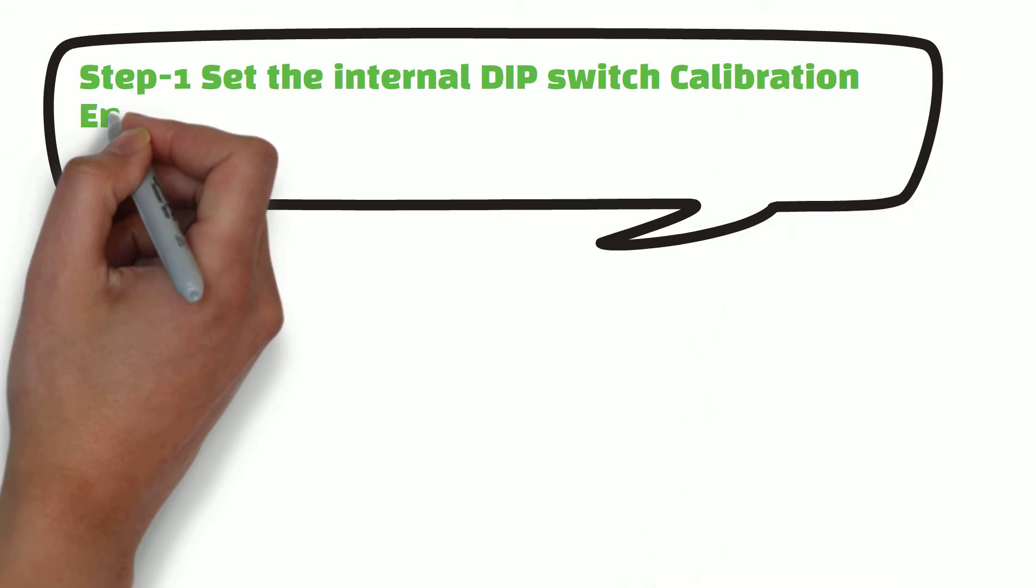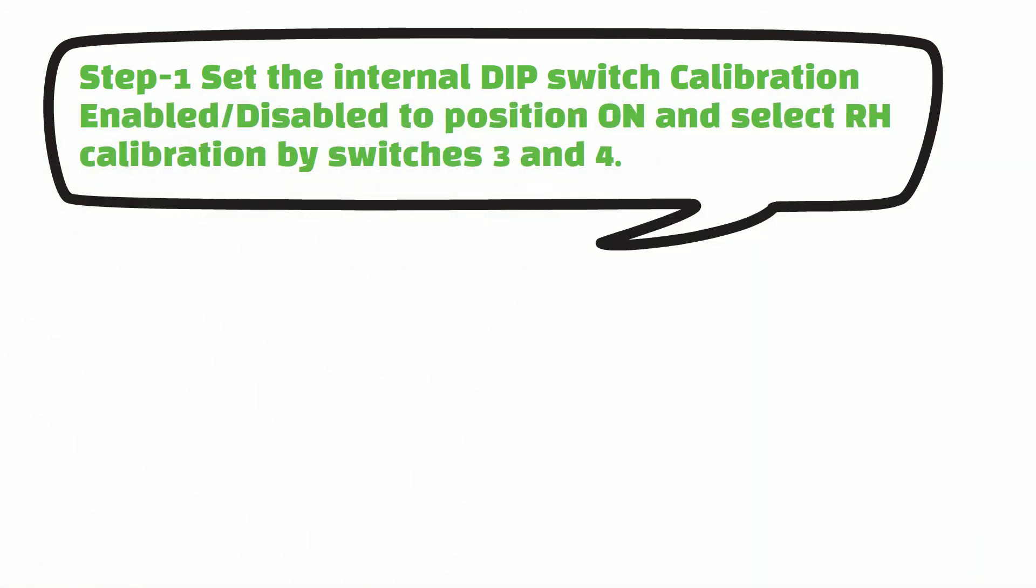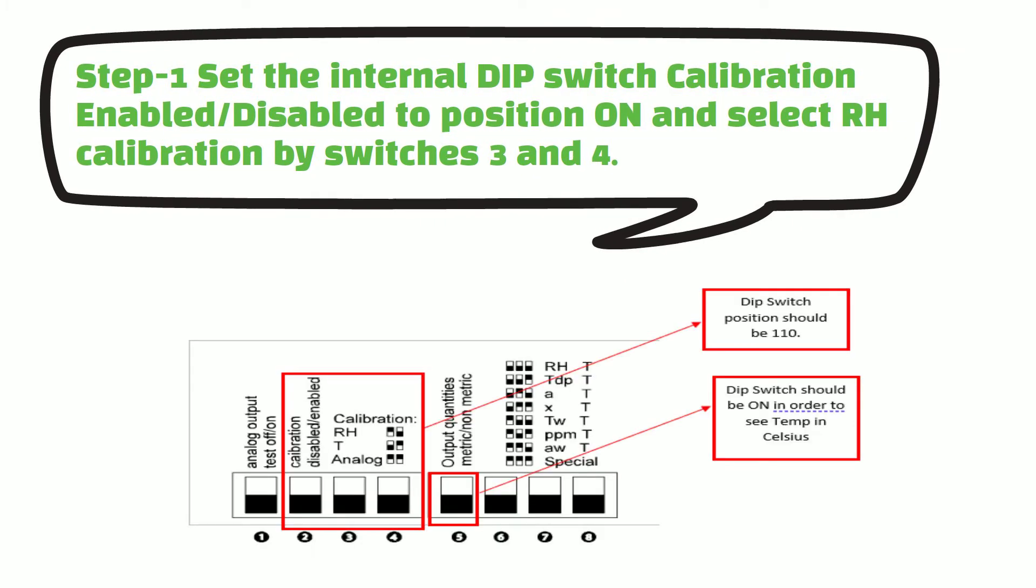HMT360 transmitter has eight internal DIP switches, which is located inside housing board. Each DIP switch has different function. For example, calibration mode can be enabled or disabled by using internal DIP switch number 2.